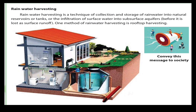Finally, we are going to learn about rainwater harvesting. It is a technique of collecting and storing rainwater into natural reservoirs or tanks, or through the infiltration of surface water into subsurface aquifers. Rainwater harvesting can be stored in natural reservoirs like ponds, lakes, or wells, or through infiltration of surface water into the soil so that rainwater is not wasted. The best method of rainwater harvesting is rooftop harvesting.